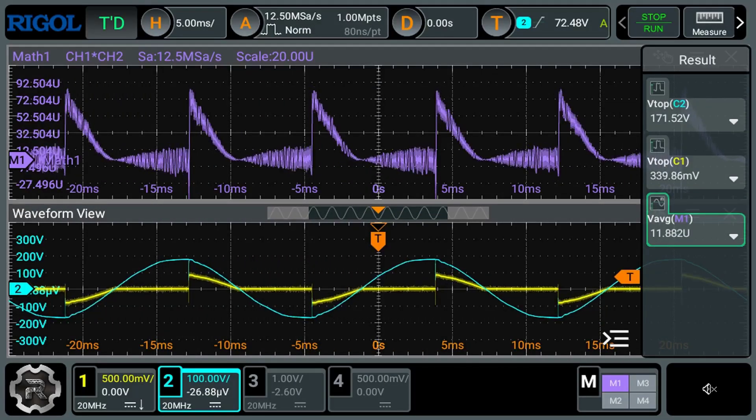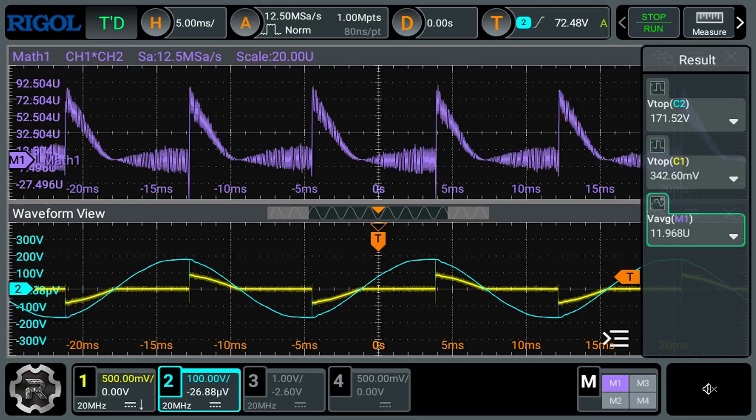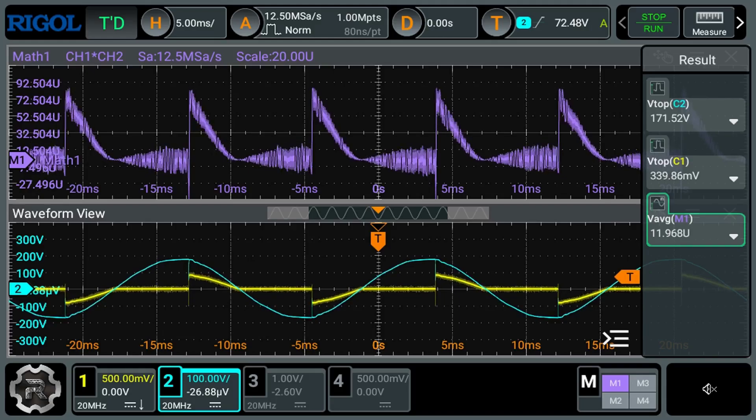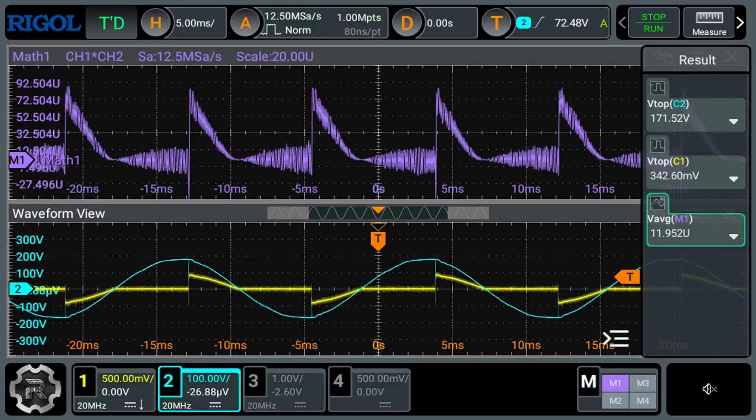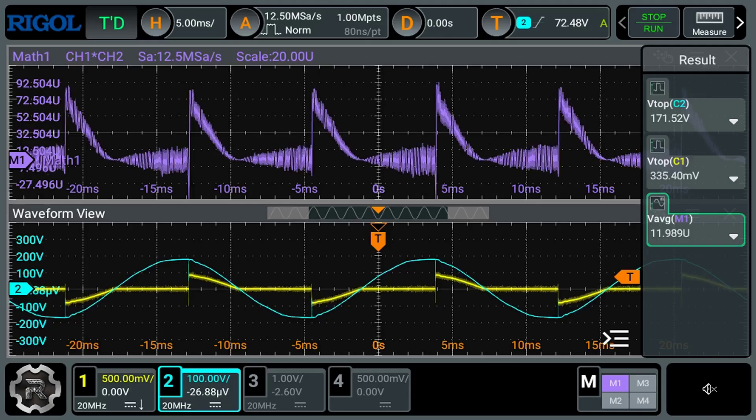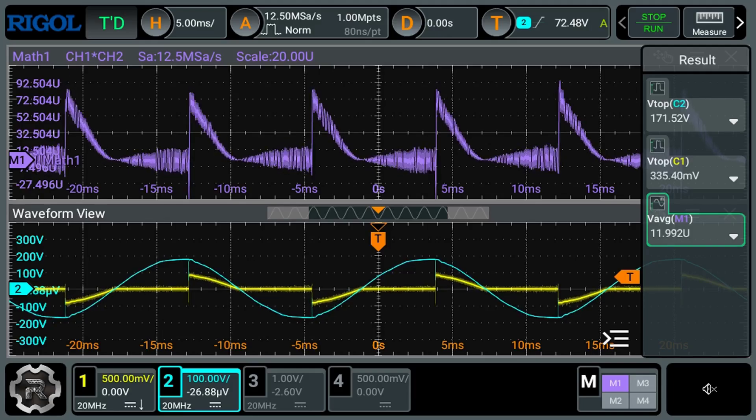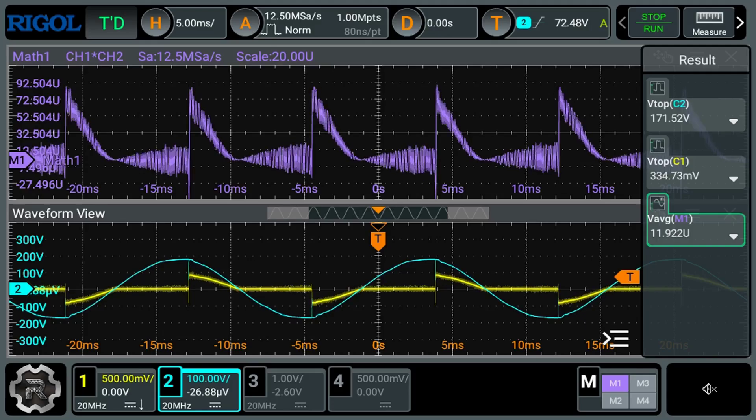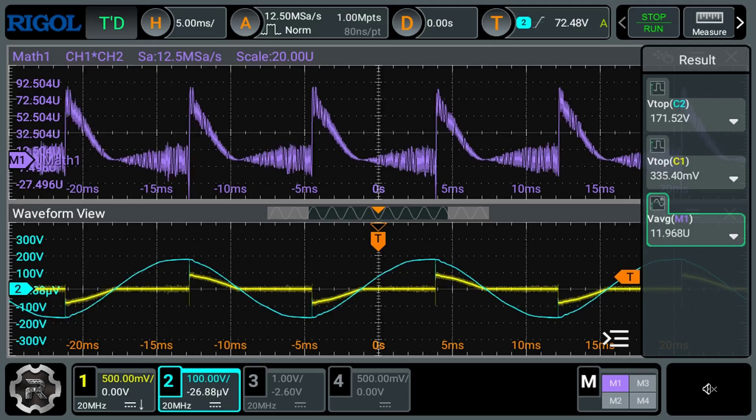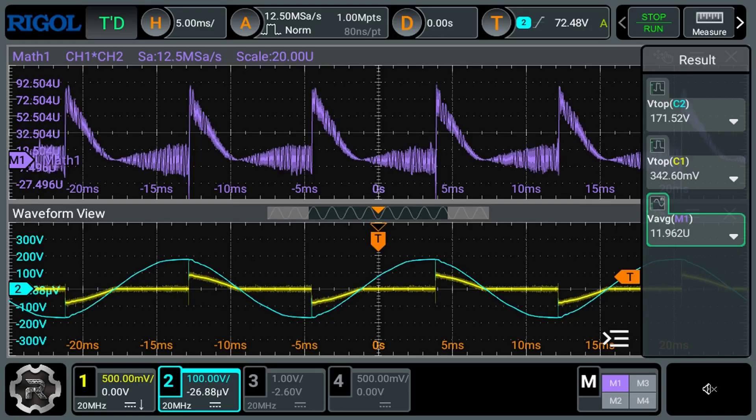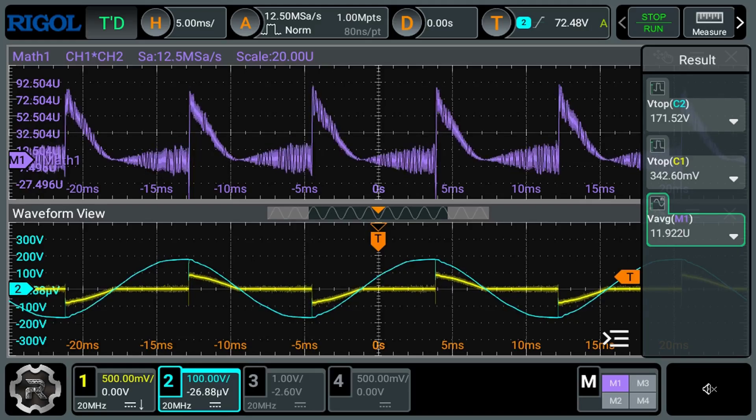Here is the waveforms for the power to the iron with the temperature control set to minimum. It has reached a stable temperature. The V average value should be very close to the watts the iron is pulling. The yellow waveform is the current through the iron with 1 millivolt being 1 milliamp. The green waveform is the voltage going to the iron. The math1 waveform is the current multiplied by the voltage. And at this setting, it's pulling around 12 watts.